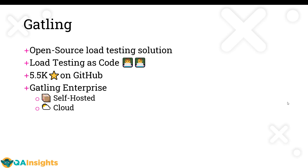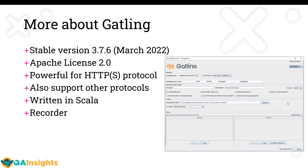Gatling has two flavors: the open source version and Gatling Enterprise. Gatling Enterprise also has two flavors — self-hosted and cloud. The stable version at the time of recording is 3.7.6, which was released in March 2022. It is licensed under Apache 2.0 and is very powerful for the HTTP protocol, and also supports other protocols such as JMS.